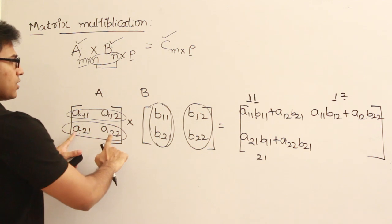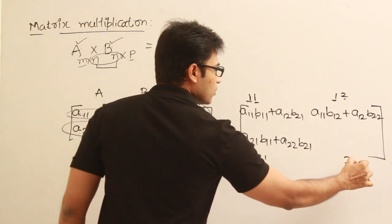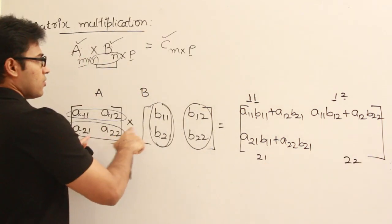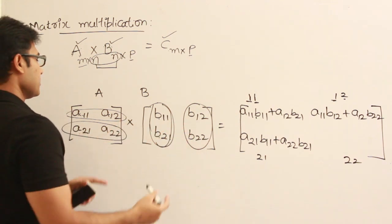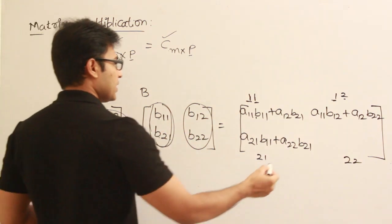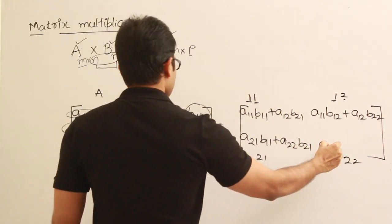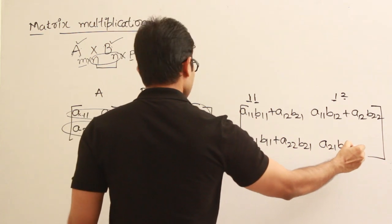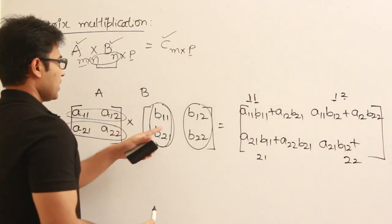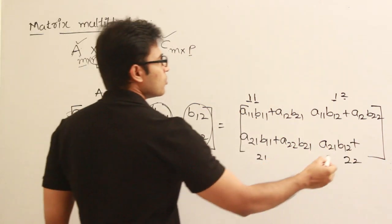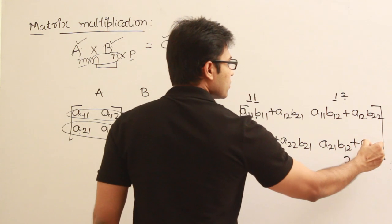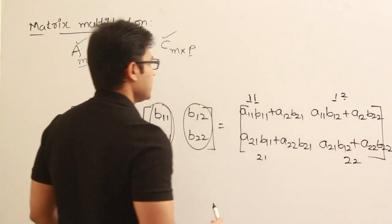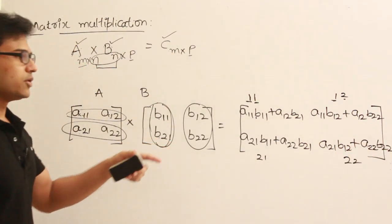For element 2,2 — second row and second column — multiply the corresponding elements and sum them up. So C22 equals A21·B12 plus A22·B22. This is how we do matrix multiplication.